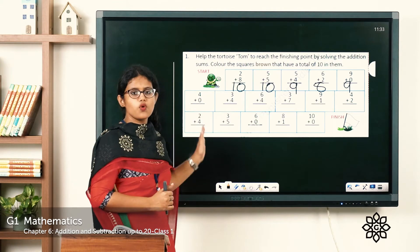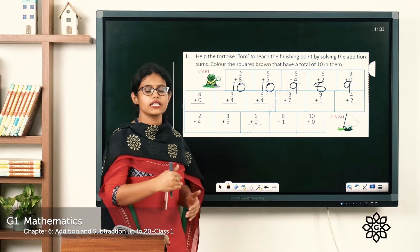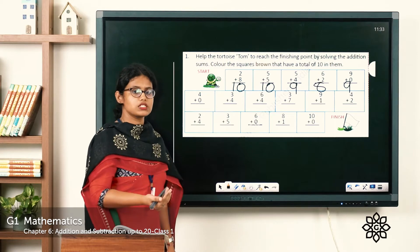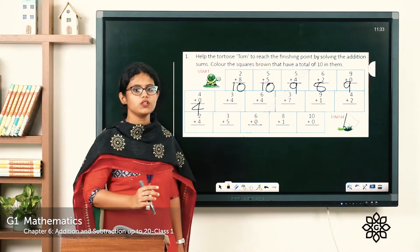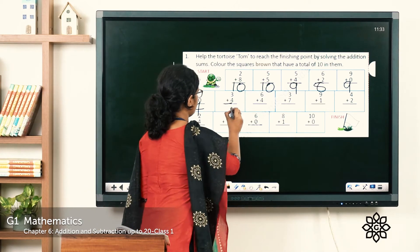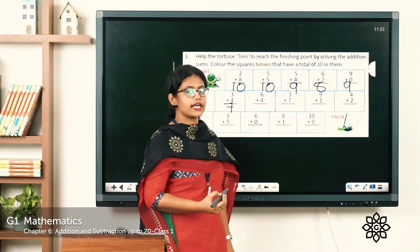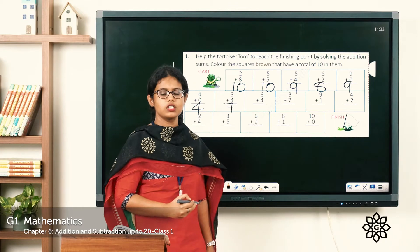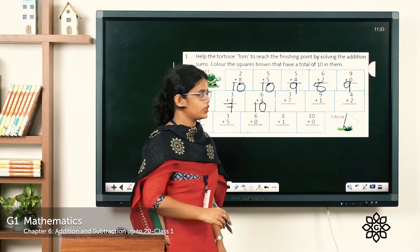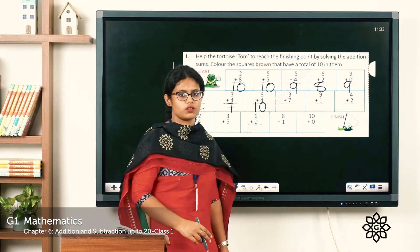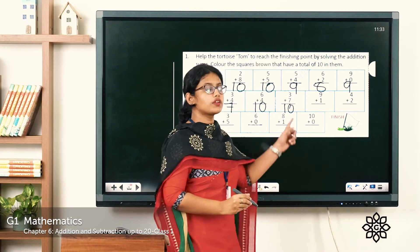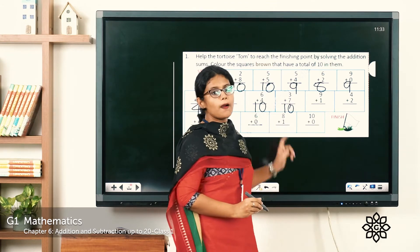4 plus 0 — when you add 0 to a number you get the same number, so 4 plus 0 equals 4. Then 3 plus 4 equals 7. Next, 6 plus 4 equals 10 — so you have to color this square brown. And 3 plus 7 equals 10 — color this square brown again. Then 9 plus 1: when you add 1 to a number you get the next number, so 9 plus 1 equals 10 — color this square brown.